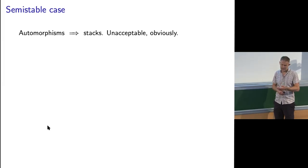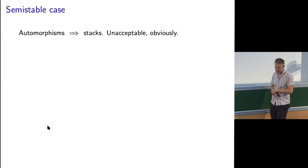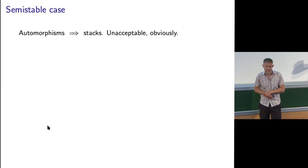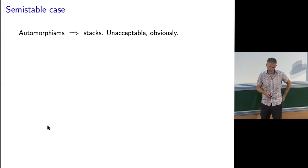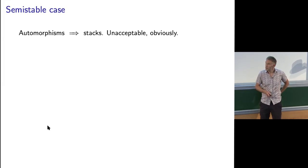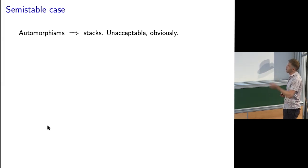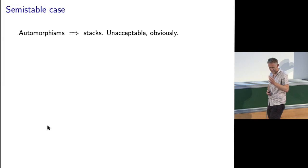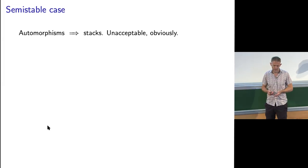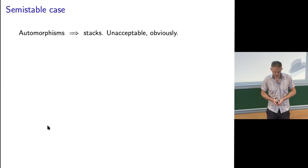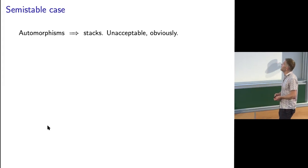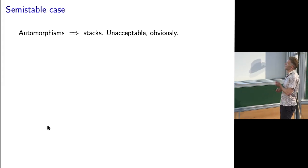It's important to try and define invariants when there are strictly semi-stables. In Donaldson theory you can do that. Once you have strictly semi-stable sheaves, you have automorphisms. In the first lecture we proved that stable sheaves essentially have no automorphisms apart from multiples of the identity, but that's not true for semi-stable. So you end up with moduli stacks instead of moduli schemes, and obviously nobody wants that.